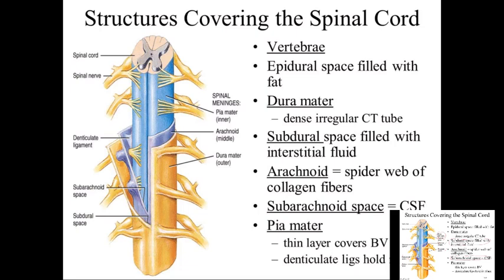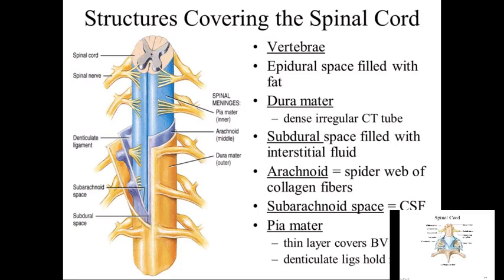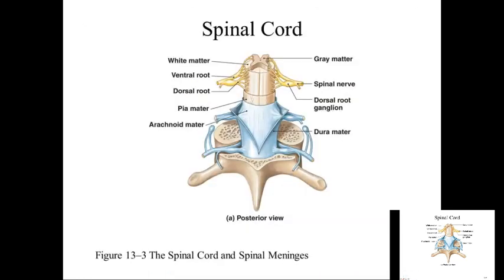This picture shows the spinal cord with the meninges and the vertebrae that protect it. Spinal alignment is very important — healthy discs and a freely movable, unfixated spine allow flexibility for the spinal cord and nerve roots to pass through.